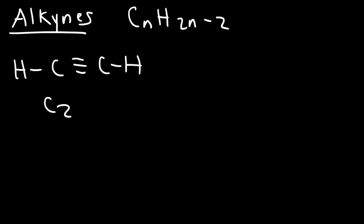So in the case of alkynes, they have the chemical formula CnH2n minus 2. Assuming we have a molecule with one triple bond. For every triple bond, you lose four hydrogen atoms. So let's look at acetylene. This is C2H2. And if we compare it to ethane, which has the same number of carbons, this is C2H6. So notice that the difference in the number of hydrogen atoms is four.